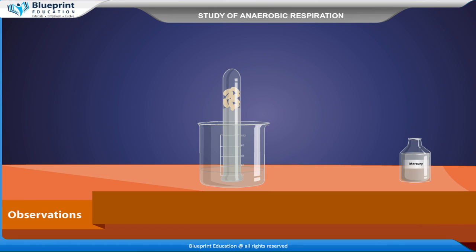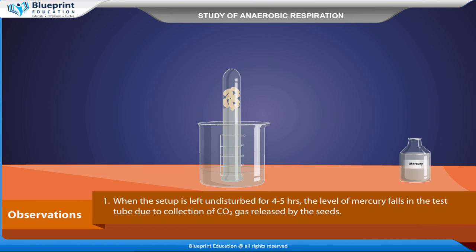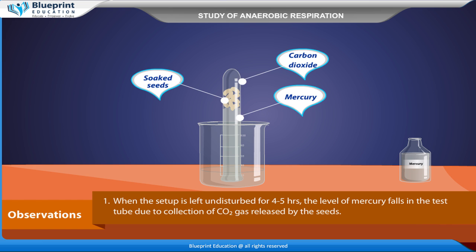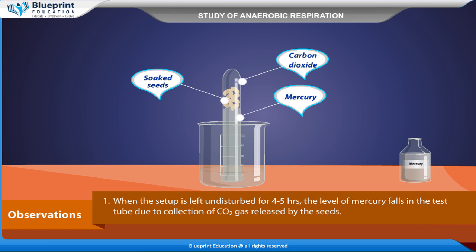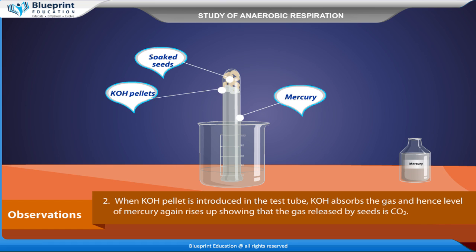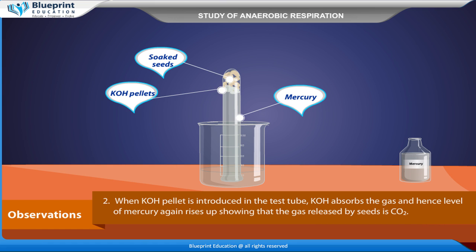Observations: When the setup is left undisturbed for 4-5 hours, the level of mercury falls in the test tube due to collection of CO2 gas released by the seeds. When KOH pellet is introduced in the test tube, KOH absorbs the gas and hence the level of mercury again rises up, showing that the gas released by seeds is CO2.